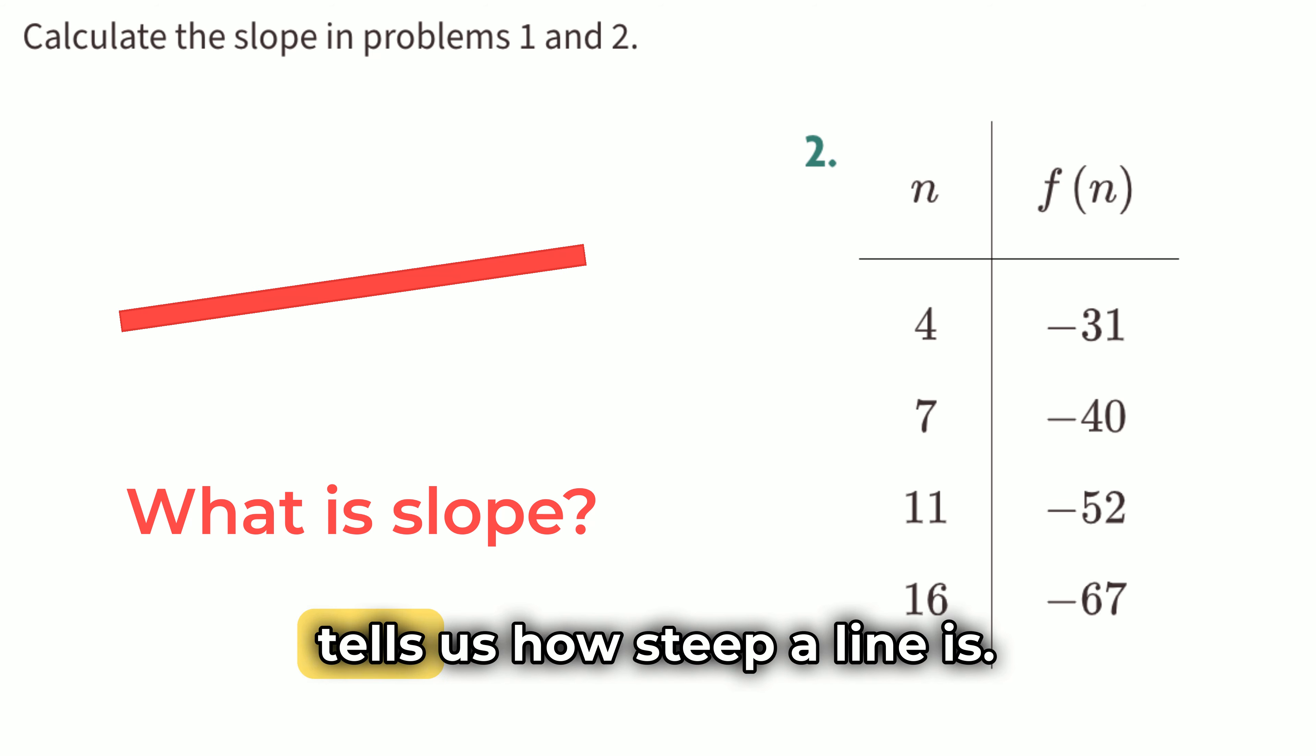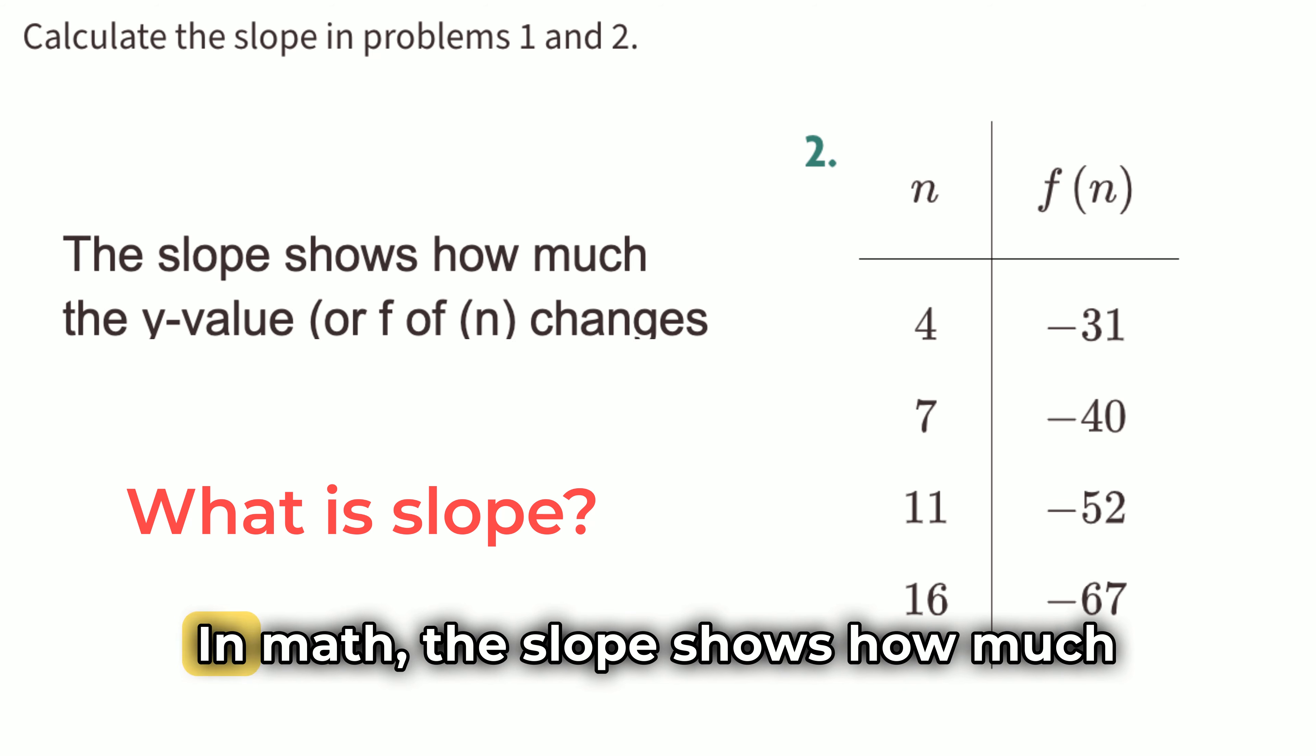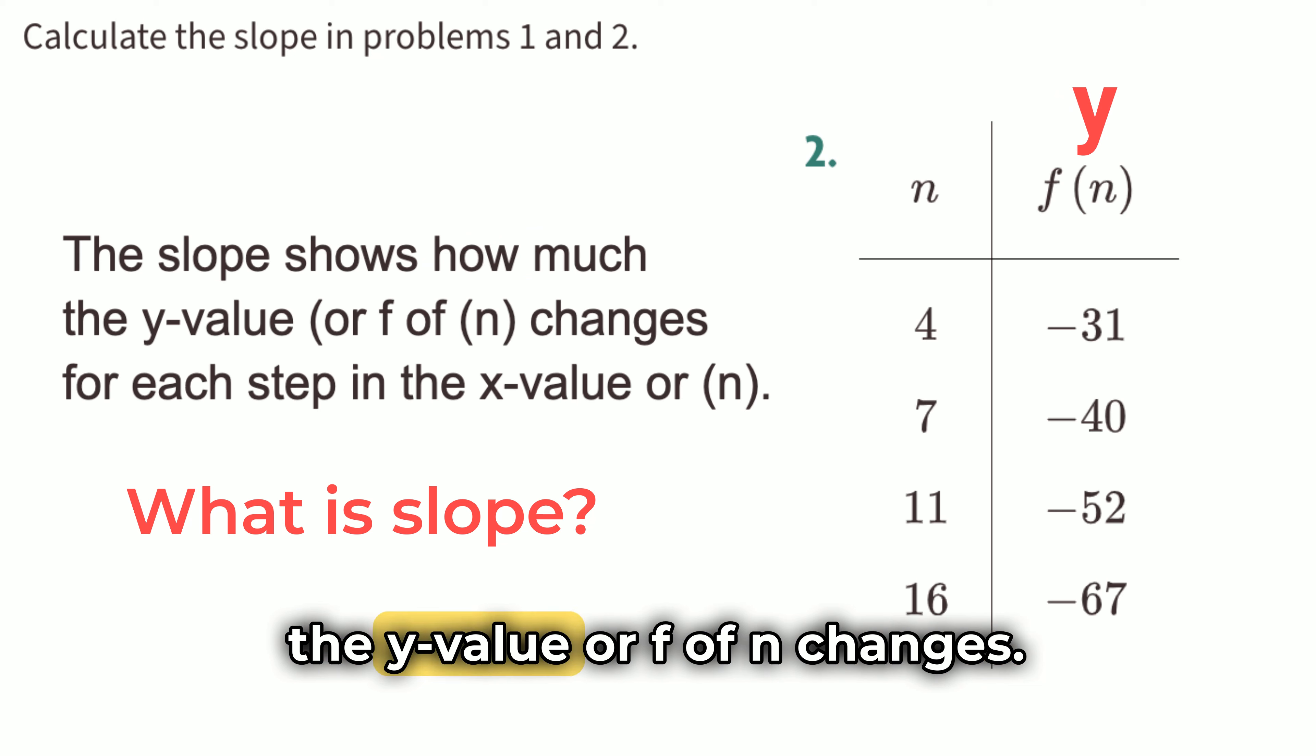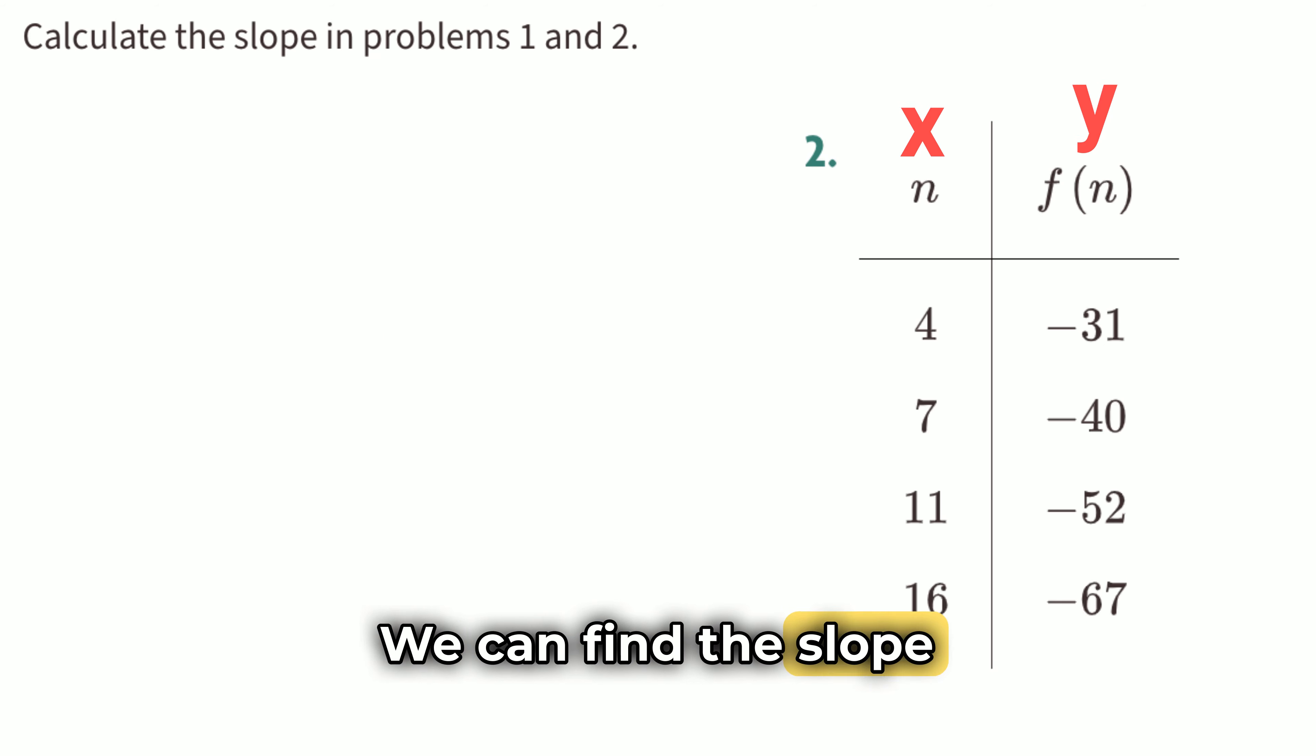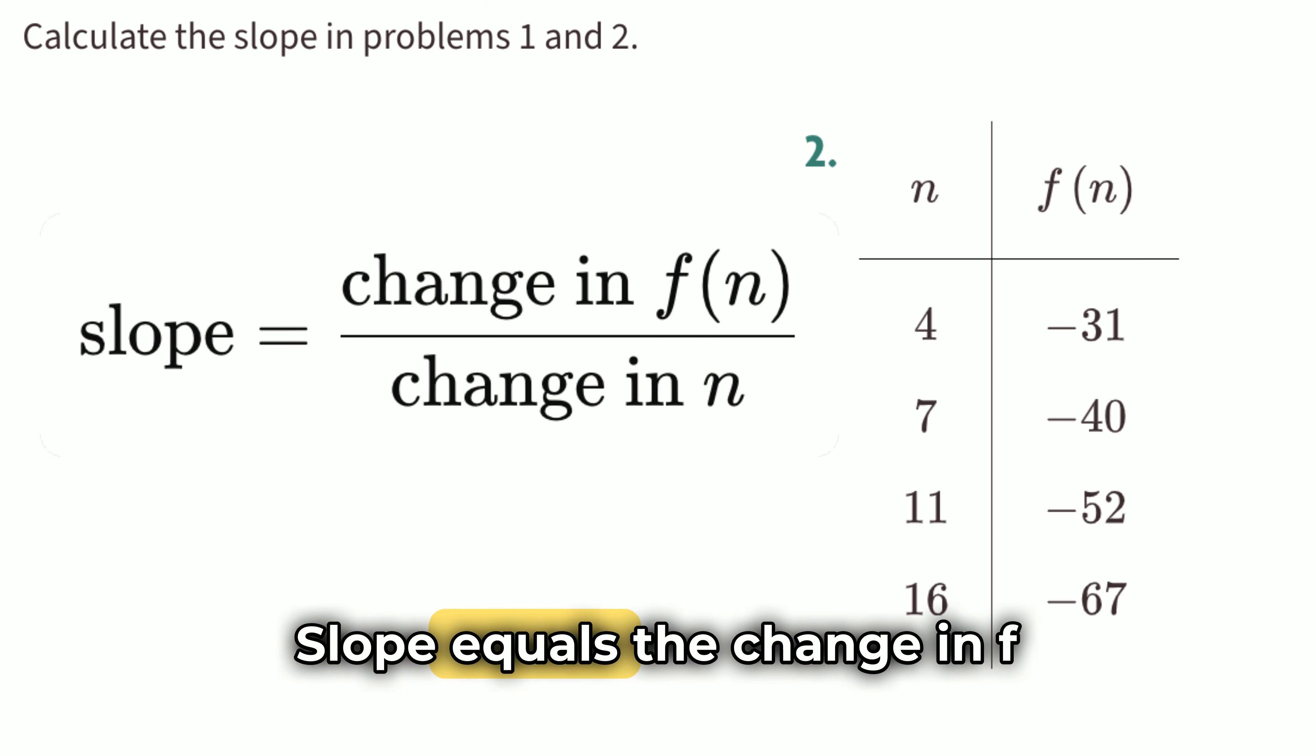In simple terms, the slope tells us how steep a line is. In math, the slope shows how much the y-value or f of n changes for each step in the x-value or n. We can find the slope using this formula. Slope equals the change in f of n divided by the change in n.